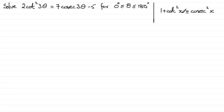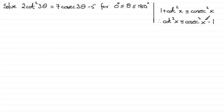We can make cot²x the subject and express it in terms of cosec²x. If we subtract one from both sides, we get cot²x ≡ cosec²x - 1. It's this identity we're going to use, because we can change cot²(3θ) — letting x = 3θ — into cosec²(3θ) - 1, giving us an equation entirely in terms of cosec.